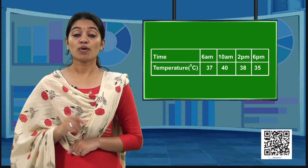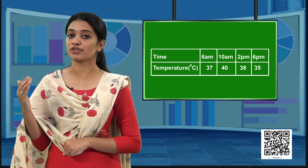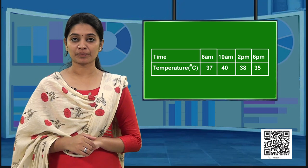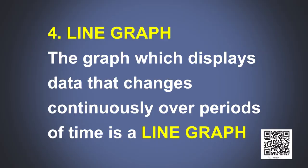In this data what you observe is the data continuously changes over periods of time. So we use line graph here. So what is line graph? A line graph is nothing but a graph which displays data that changes continuously over periods of time. How to draw graph to represent this data?